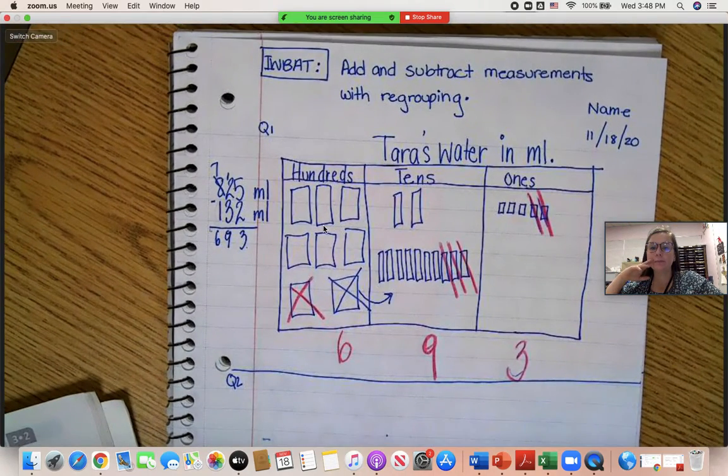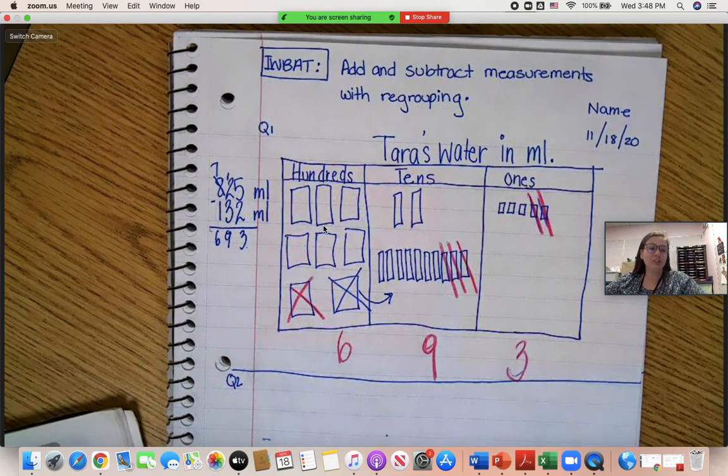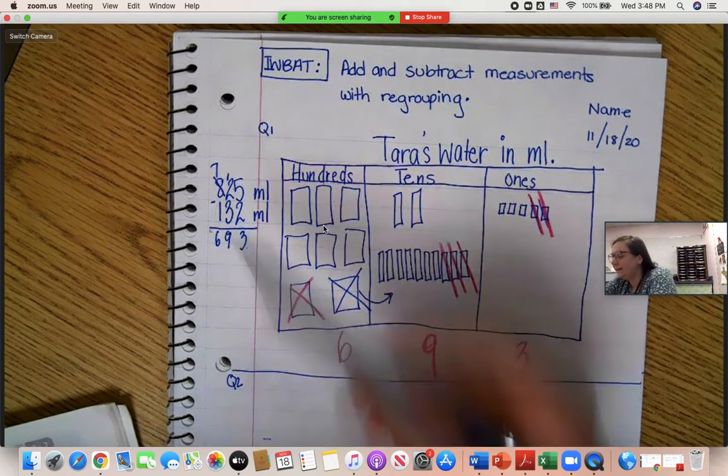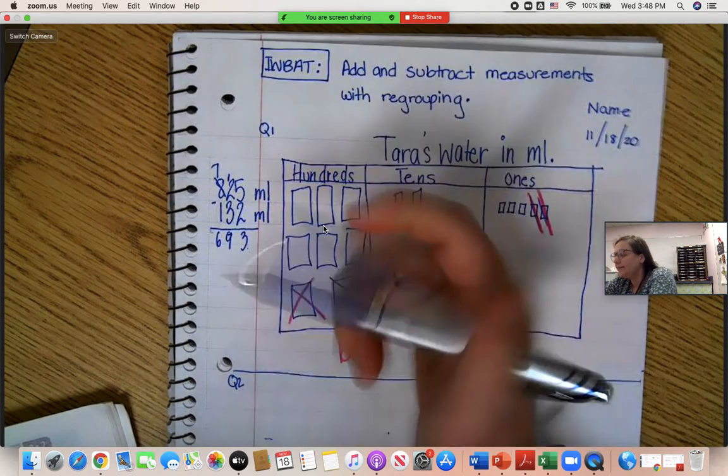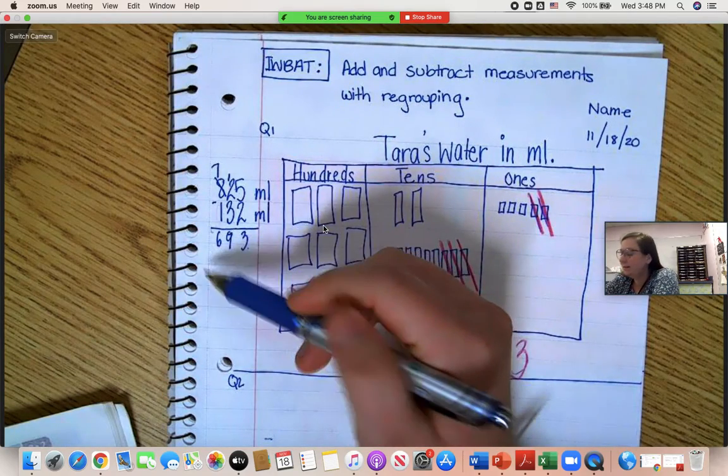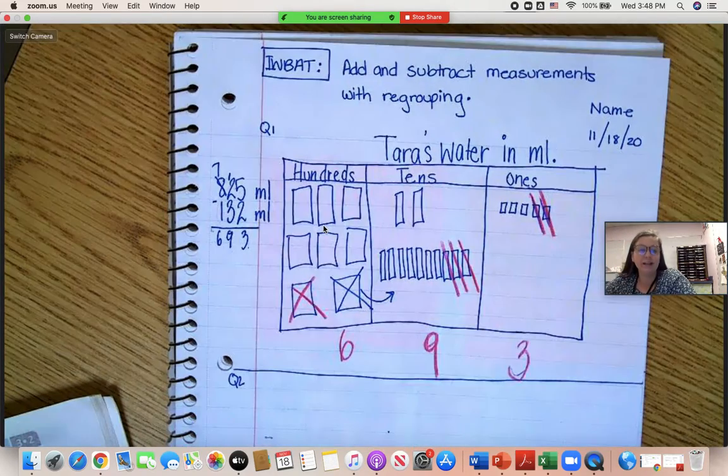So, let's see. Okay, 12 minus 3, 12, 11, 10, 9. Okay, 7 minus 1, 6. 693 is our answer.